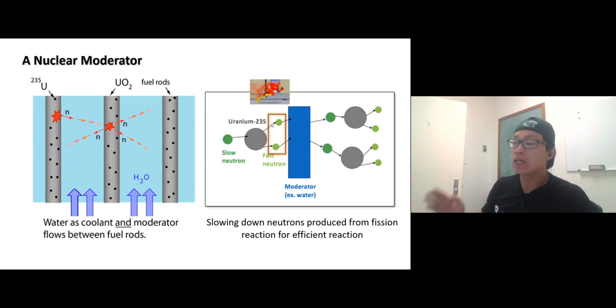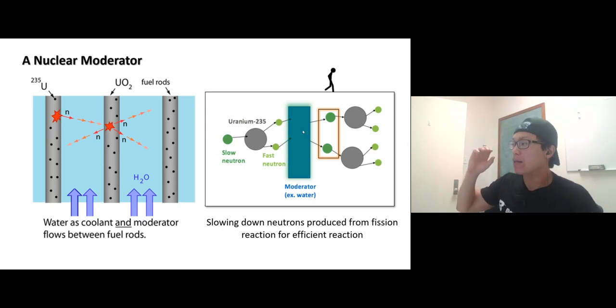When the fast neutron comes out of the first generation of the fission reaction, we run water through it. It could be water or graphite, something inert that can slow down this fast neutron to a walking pace so we can control the fission reaction.